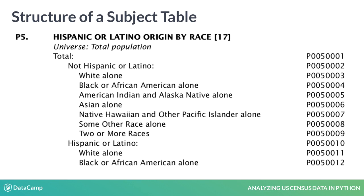Column 1 is the total population. It is broken down into two categories: not Hispanic or Latino in column 2, and Hispanic or Latino in column 10. These columns are broken down further into seven racial groupings. Indented columns add up to their out-dented parent. For example, columns 3 to 9 add up to column 2.